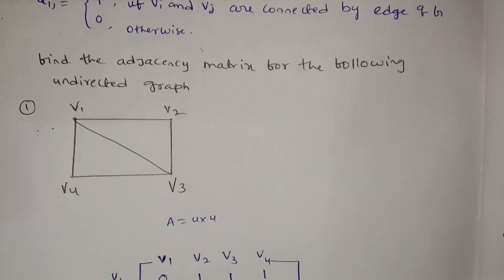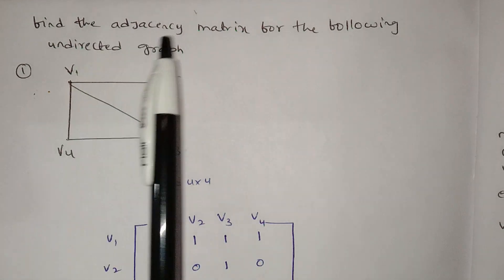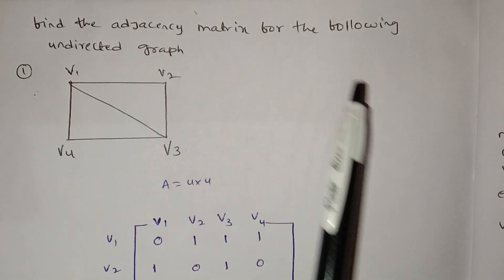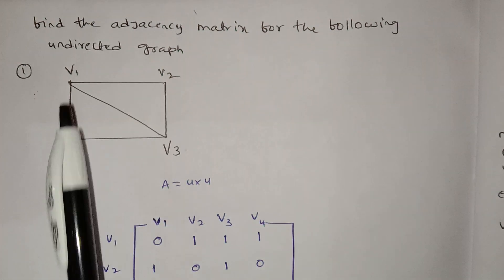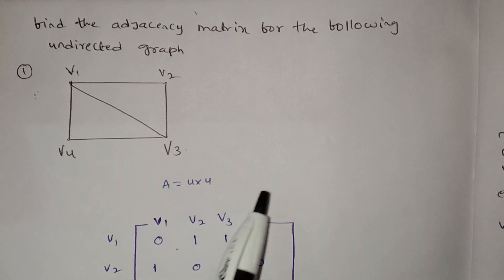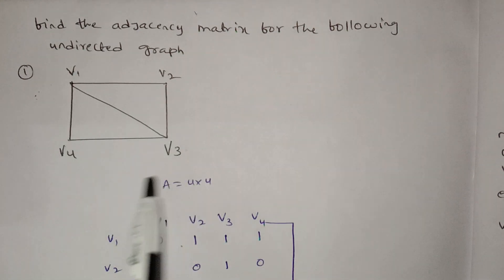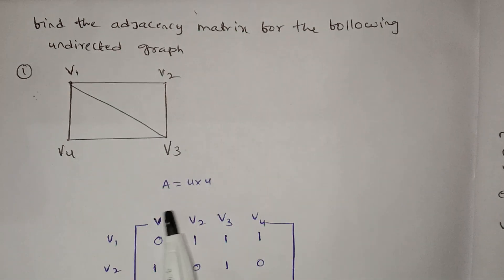First, I will show you the undirected graph. Find the adjacency matrix for the following undirected graph. We will show you the adjacency matrix as a 4x4 matrix. The vertices are V1, V2, V3, V4 — total 4 vertices.